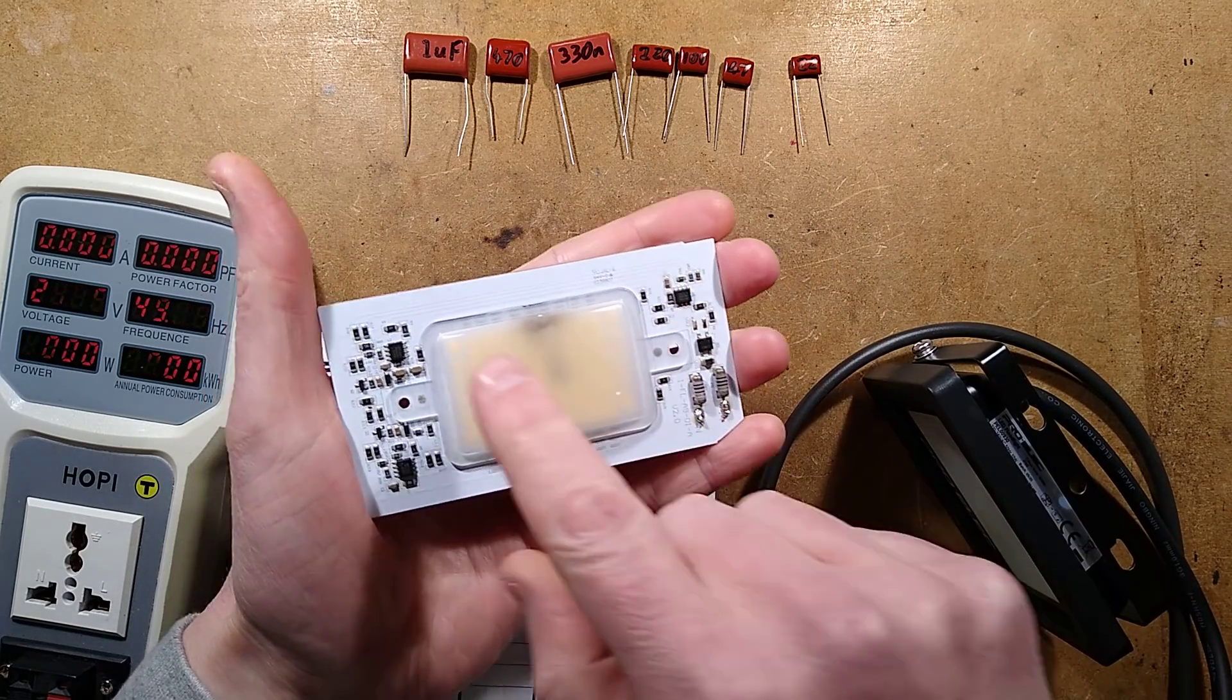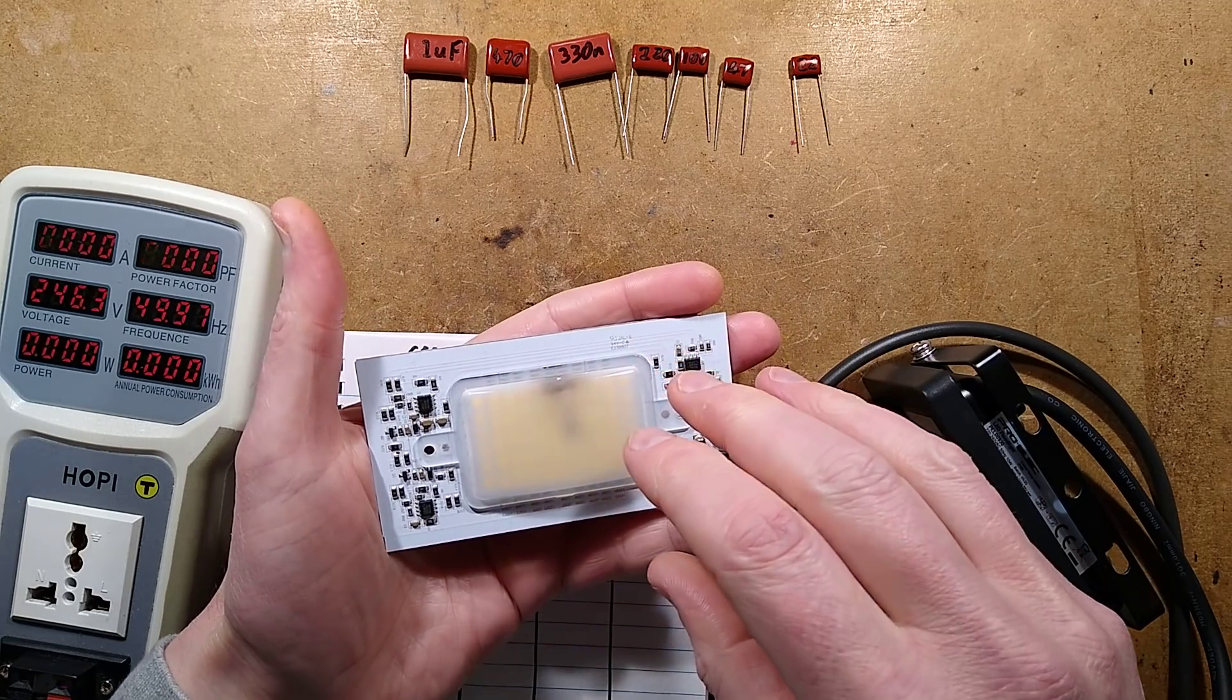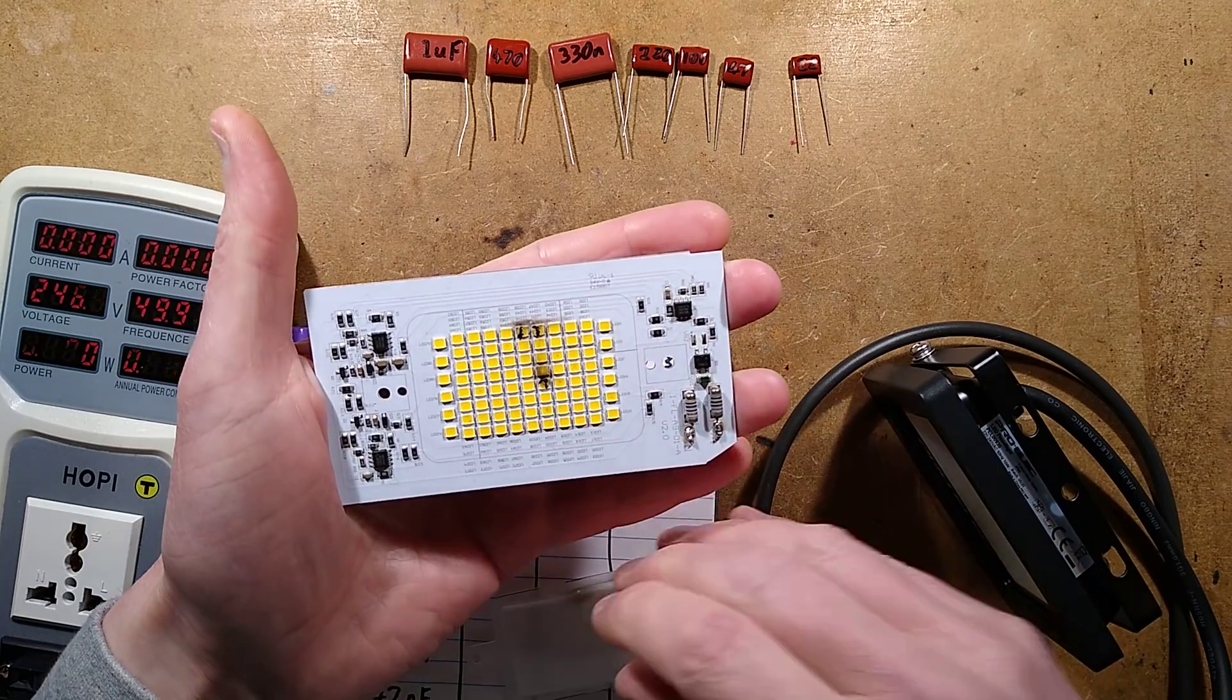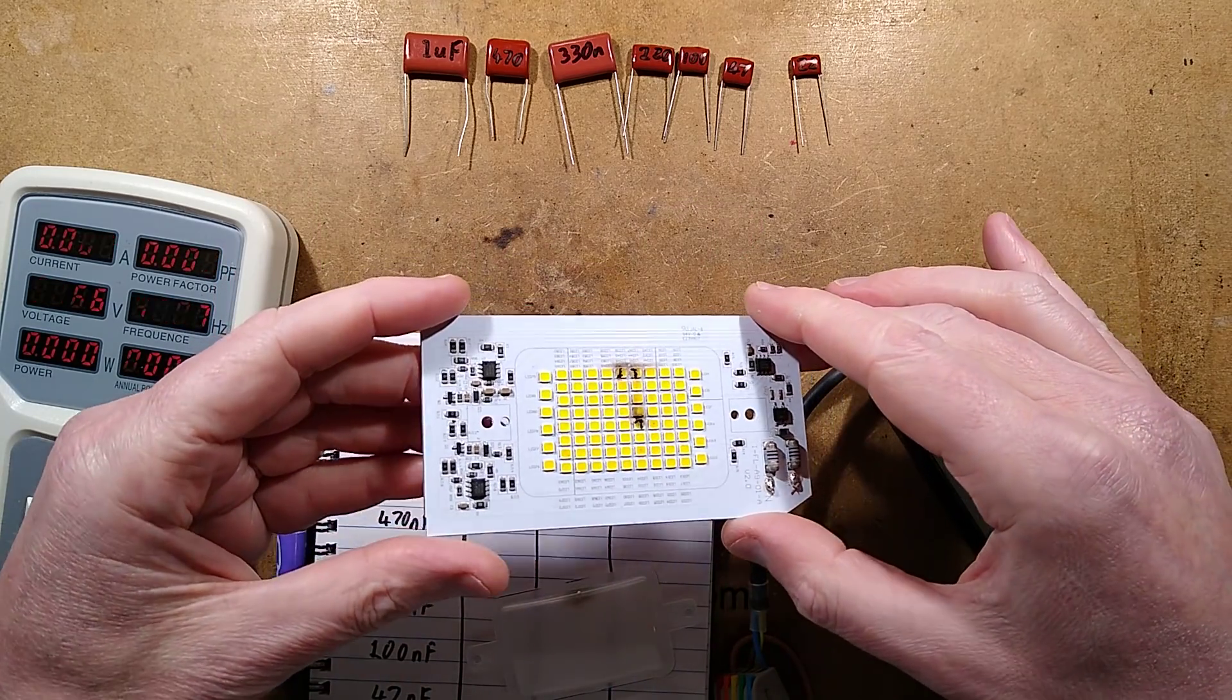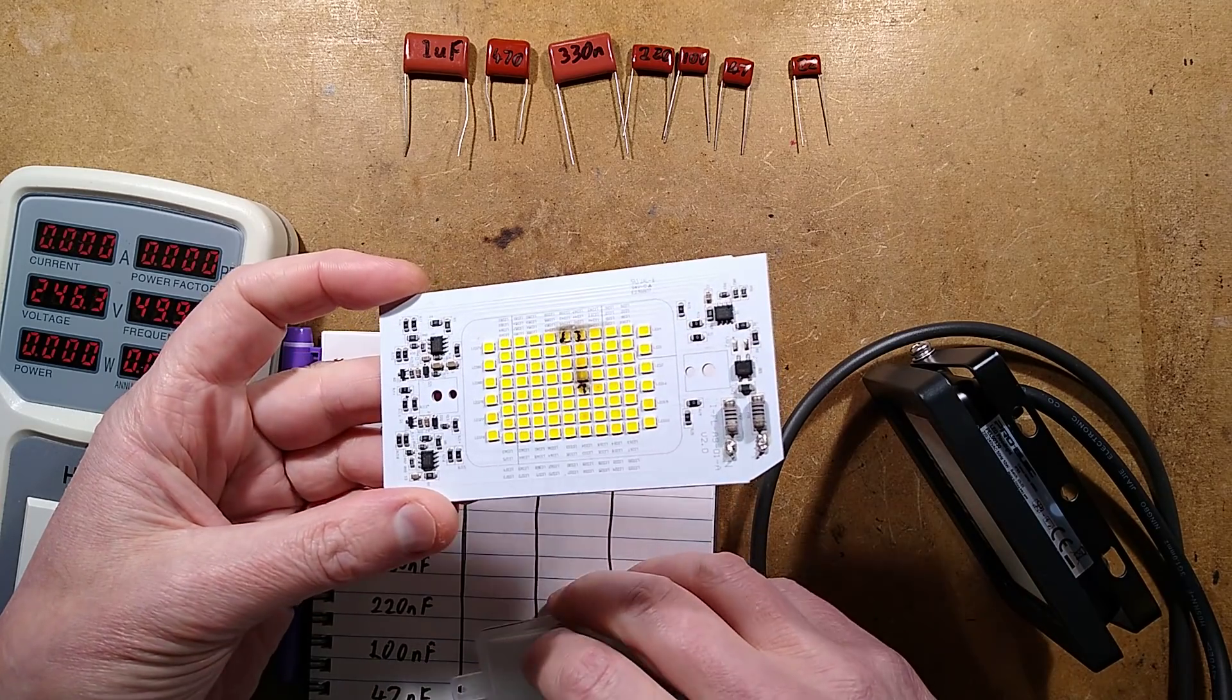And so it uses current regulation and that kind of reacts to the temperature of the LEDs as well. But with these things, they usually grill the LEDs. And as you can see in this one, it's just smoked LEDs. Then they've tracked across and they've blown up and it's caused failures.